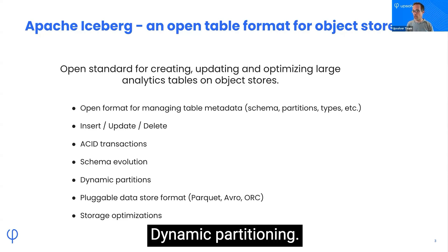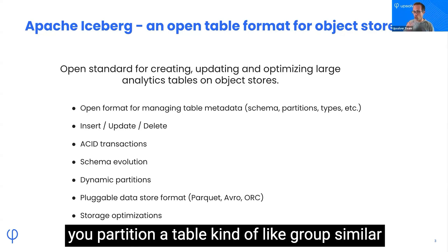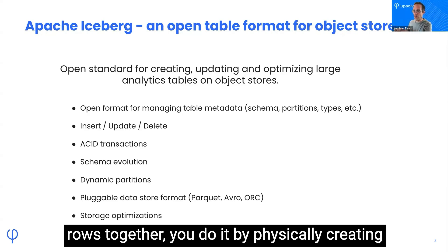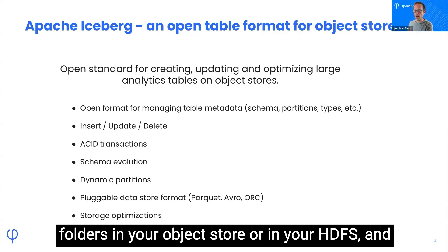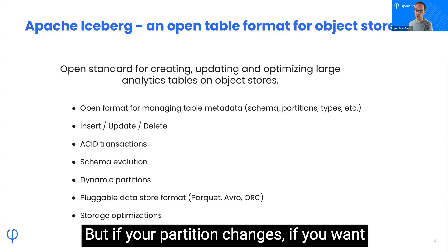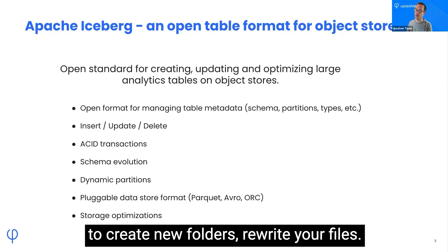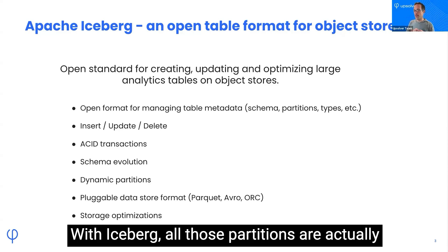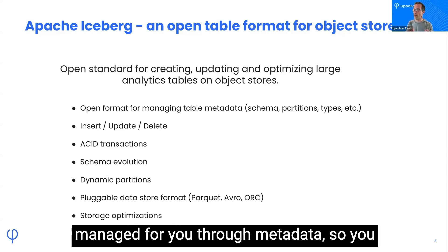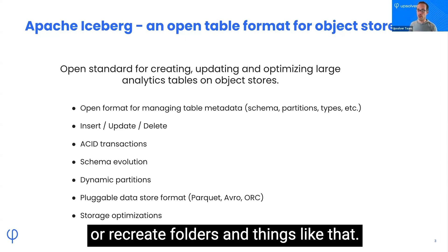Dynamic partitioning: traditionally with Hive tables, when you partition a table — grouping similar rows together — you do it by physically creating folders in your object store or HDFS and putting relevant files inside those folders. But if your partition changes, say from year partitioning to year-month-day partitioning, you have to create new folders and rewrite your files, which is expensive. With Iceberg, all those partitions are managed through metadata, so you don't have to recreate files, copy data, or recreate folders.